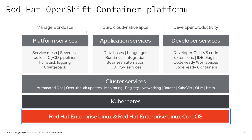Core OS is immutable, and it can do things like receive over-the-air updates — basically you're not supposed to touch it. The good thing is Core OS comes as part of OpenShift. And then on top of that is Kubernetes, which is really the core technology that most cloud platforms are built around, and that's true for OpenShift too.